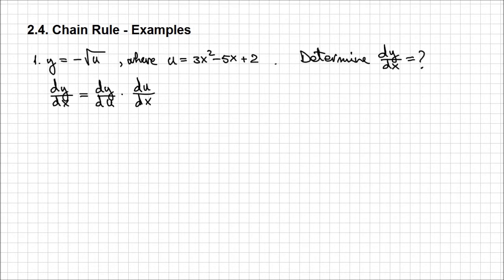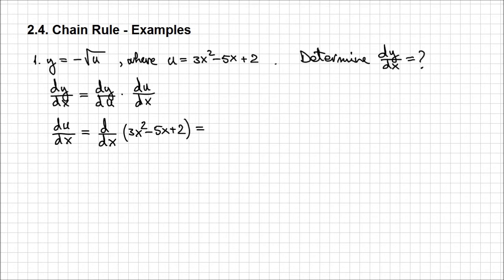In other words, as long as we calculate dy/du and du/dx separately, we can calculate our final result for dy/dx. So let's do just that. I'm going to start with du/dx, which is nothing else than d/dx of the expression for u: 3x squared minus 5x plus 2. This derivative is very simple — it's going to be 6x minus 5.